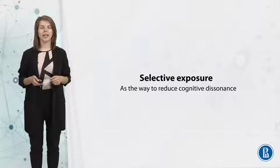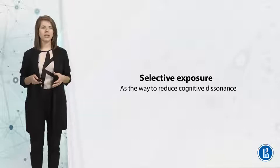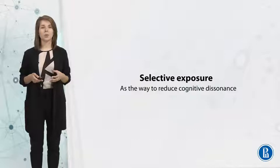In the previous part of our lecture we were discussing the cultivation effect of television on the audience. But maybe the audience within media effects can be seen a little differently. Maybe we do carry on some sort of critical thinking and can choose the information we like. This is what we're going to discuss now — the theory of selective exposure, which refers to the way we can reduce cognitive dissonance.